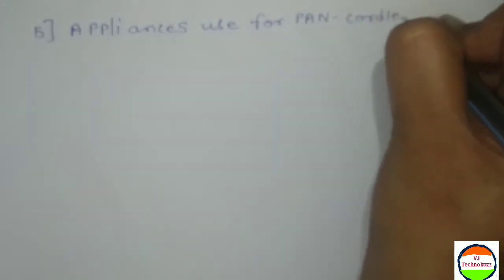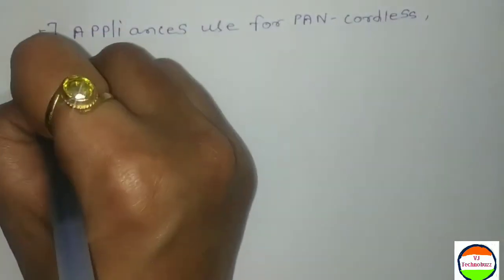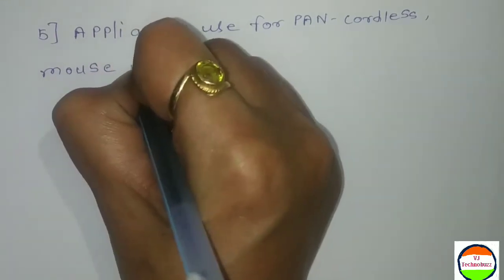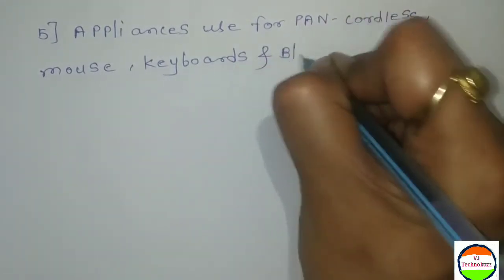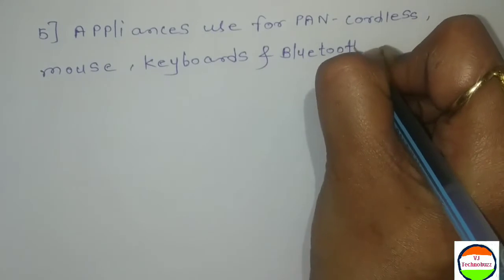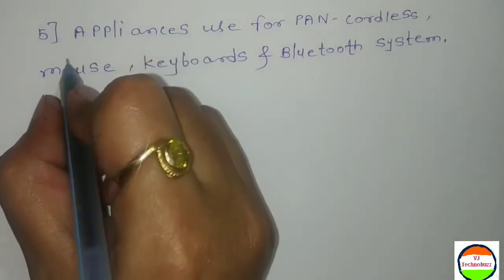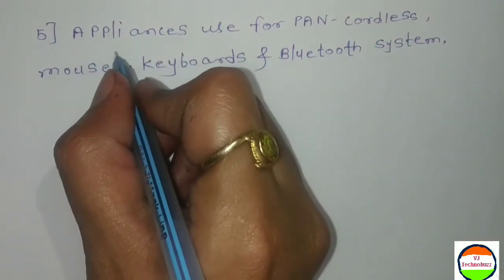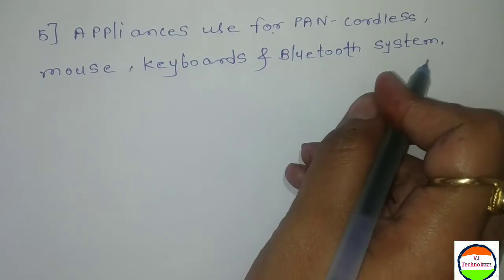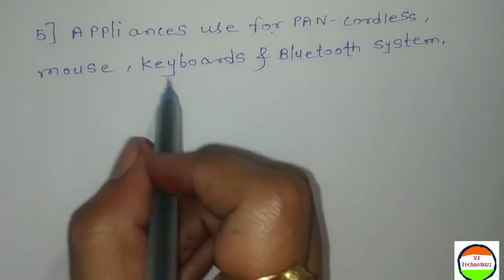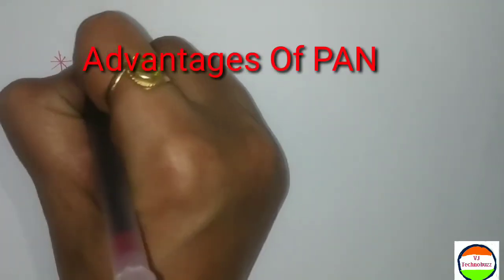The fifth characteristic of PAN network is: appliances used for PAN are cordless mouse, keyboards, and Bluetooth systems. So these are the five characteristics of PAN network.